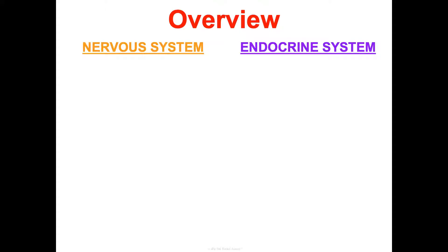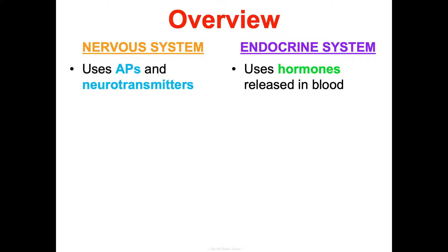How does the endocrine system differ from the nervous system in terms of control and coordination? The nervous system uses action potentials and neurotransmitters to send signals, while the endocrine system uses hormones released into the blood. Some chemicals can act as neurotransmitters when released by a nerve cell, and as hormones when released from a gland into the blood — so it can work both ways.